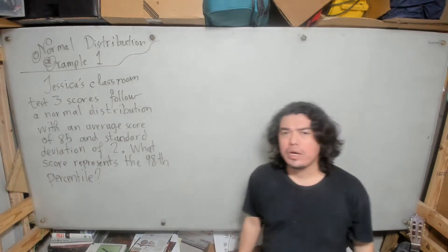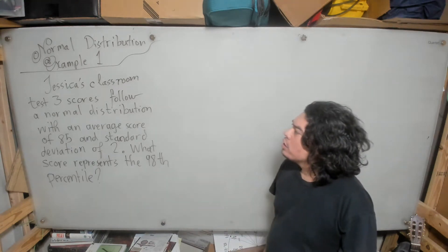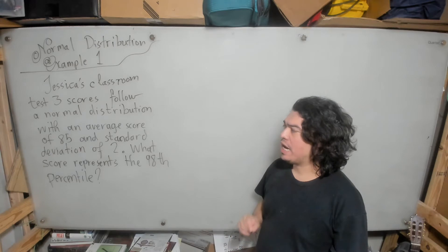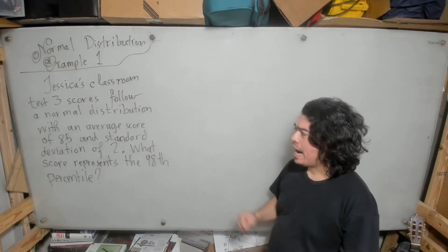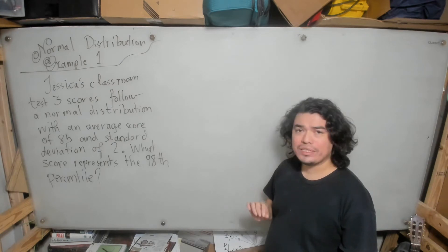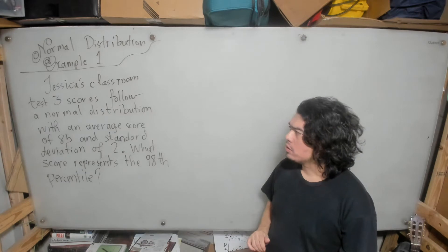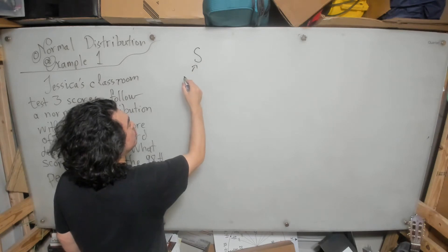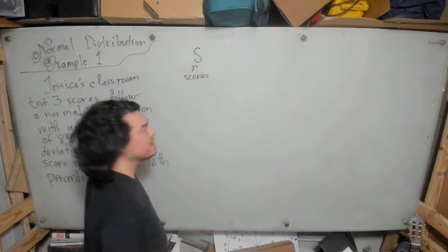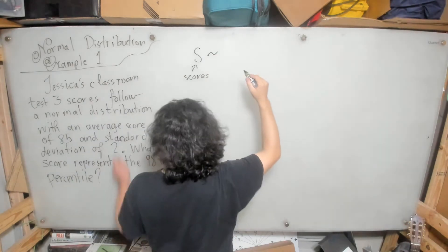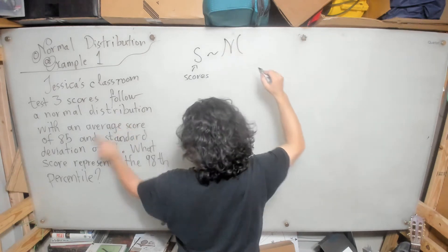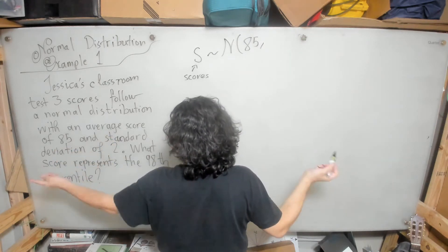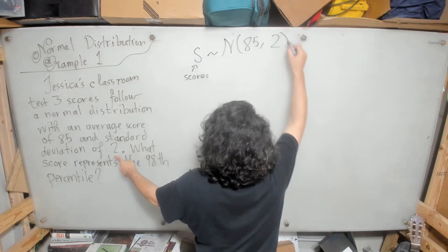Let's read the example together. Jessica's classroom test three scores follow a normal distribution with an average score of 85 and a standard deviation of two. Let S represent the distribution of scores for test three in Jessica's class. It's normally distributed with a mean of 85 — remember, mean is just another way of saying average — and a standard deviation of two.